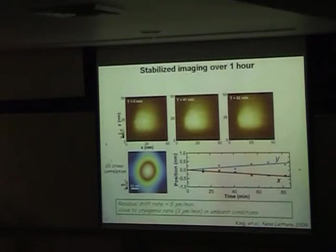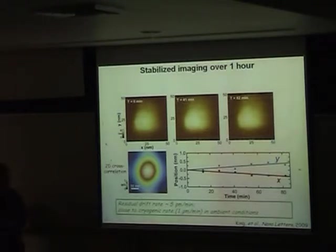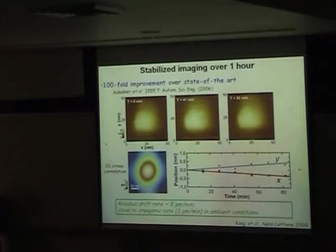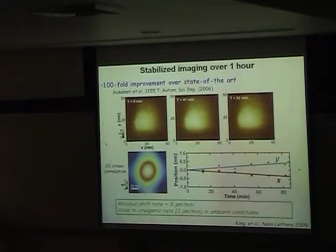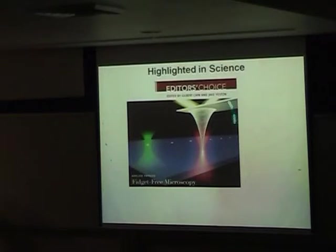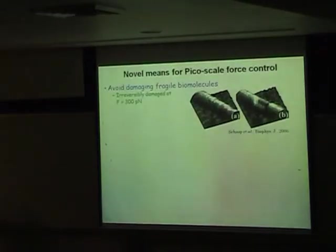You can cross-correlate successive images and track the peak of that cross-correlation as position versus time. Over the course of 80 minutes we've drifted by about 4 angstroms in X and Y - really stable, certainly below a nanometer over an hour at room temperature. The residual drift rate of the instrument is about 5 picometers per minute. This is very close to the best ever done in scanning tunneling microscopy, which is about 1 picometer per minute - but that's at ultra-high vacuum at 4 degrees Kelvin. We're now at these more biologically useful conditions: room temperature. This represents about a hundred-fold improvement over current state-of-the-art.